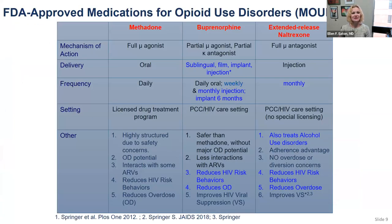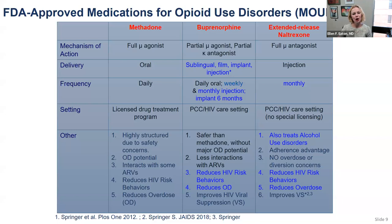In terms of FDA-approved medications specifically for opioid use disorder, we have three that are highly effective. We prefer opioid agonist therapy — those are the first two columns: methadone and buprenorphine. Methadone is a full opioid agonist, and buprenorphine is a partial agonist. On the far right is extended-release naltrexone, which is an antagonist.